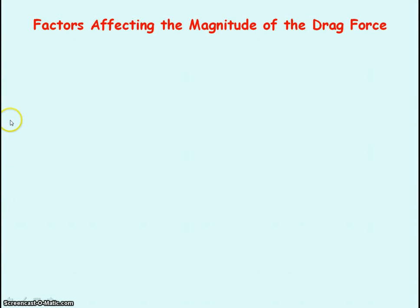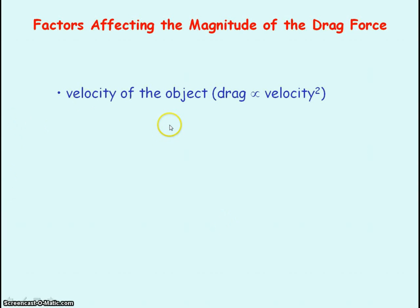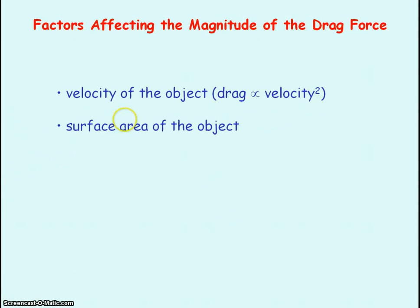Now let's look at the factors affecting the magnitude of the drag force. The first factor is the velocity of the object — drag is proportional to velocity squared, so doubling the velocity quadruples the drag. The second factor is the surface area of the object: increasing the surface area increases the drag force, because you have a larger area in contact with the fluid you're moving through, creating more friction and resistance.